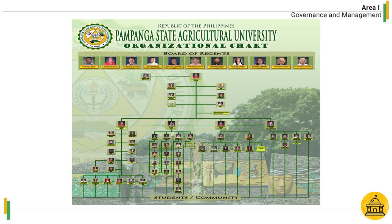The governance of the institution is clearly defined in the organizational structure. The powers, functions, duties, and responsibilities of the key officials are well delineated. The organizational structure is used in defining the lines of communication and coordination.